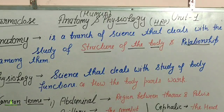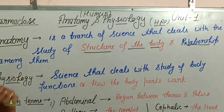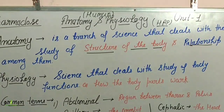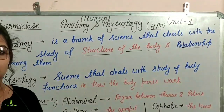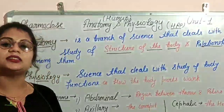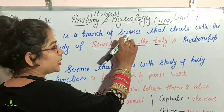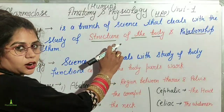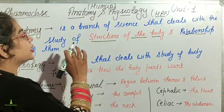Let us start with the introduction part. First, anatomy — the word anatomy comes from 'ana' meaning dissection or cut, and 'tomy' meaning study. Anatomy is a branch of science that deals with the study of the structure of the body and the relationship among its parts.